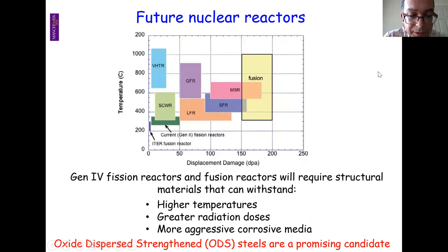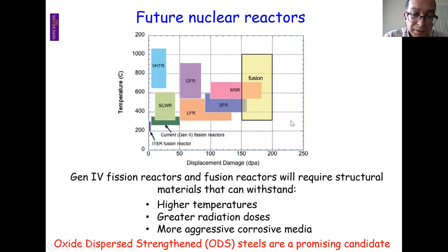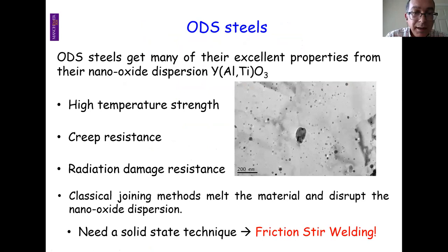Moving to future reactors: current reactors operate at moderate temperatures and low DPA levels, but Generation IV future reactors are expected to reach temperatures close to 1000°C and DPA levels of 100 to 150. For nuclear fusion conditions are even more extreme. This means we need different material solutions — one promising candidate is ODS (oxide dispersion-strengthened) steels: a ferritic steel containing very fine, high-temperature-stable nanoparticles that provide excellent creep resistance and radiation damage tolerance.